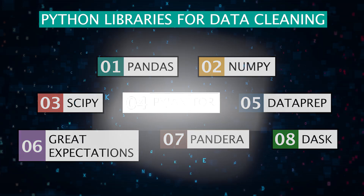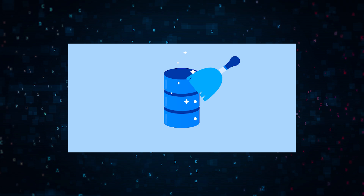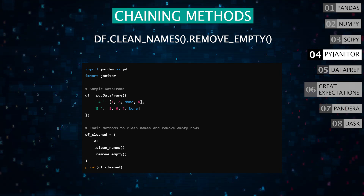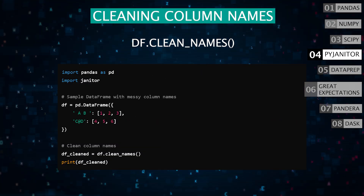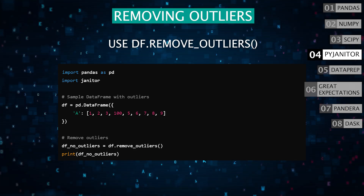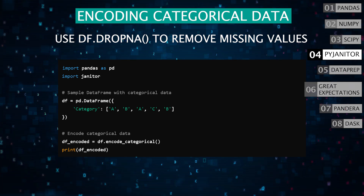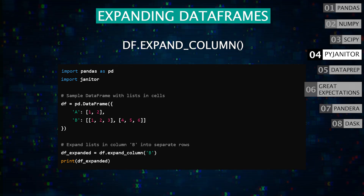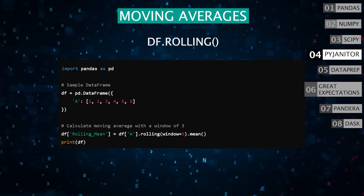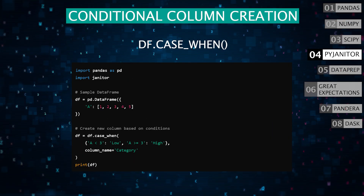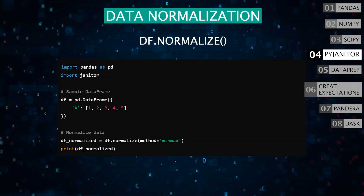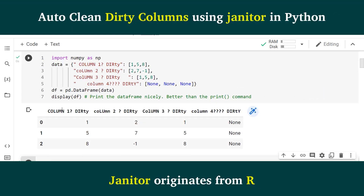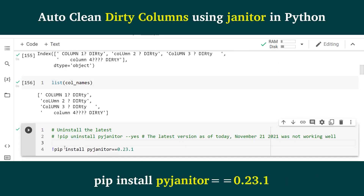The next library is PyJanitor. It builds on top of Pandas to provide additional data cleaning functionalities. Clean data using method chaining for readability, e.g., df.clean_names().remove_empty(). Easily clean column names with df.clean_names. Use df.remove_outliers to handle outliers. Encode categorical data with df.encode_categorical. Impute missing values with df.impute. Expand lists in cells into separate rows with df.expand_column. Concatenate DataFrames with df.concat. Calculate moving averages with df.rolling. Create new columns based on conditions with df.case_when. Normalize data with df.normalize. Convert categorical labels to numbers with df.label_encode. PyJanitor is a great addition if you're already familiar with Pandas and want to streamline your data cleaning process.